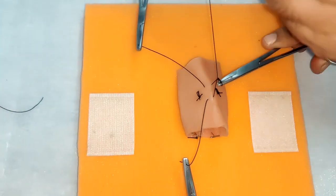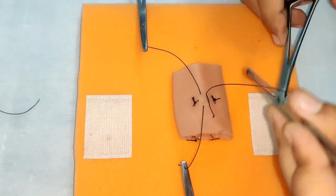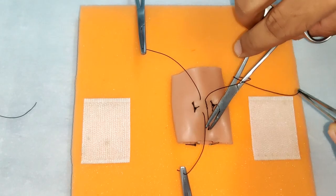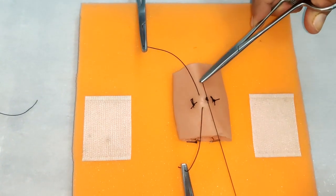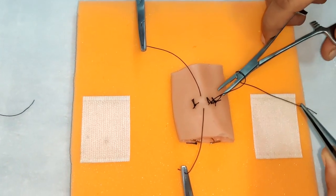Now we will come again in the center and repeat the same step. The advantage of this technique is that we can see all the edges while taking our sutures.